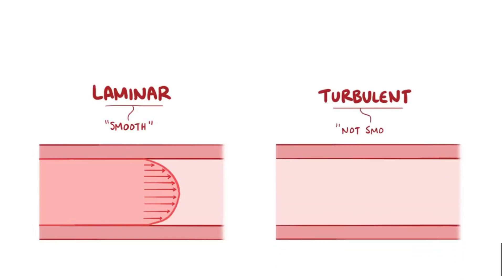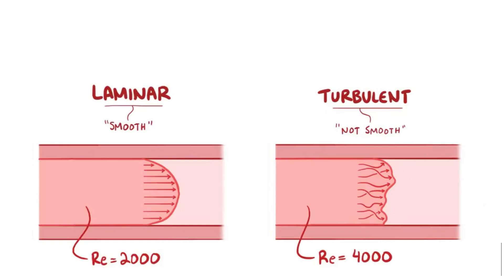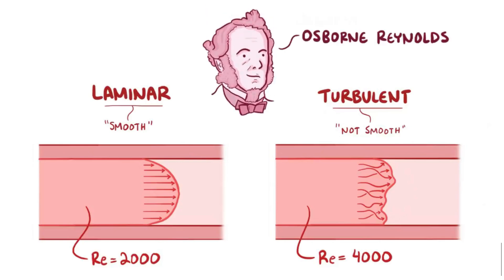Turbulent flow, on the other hand, is when the blood's not flowing smoothly, and we can figure out if blood's likely to be laminar or turbulent by finding its Reynolds number, or Re, which is named after Osborne Reynolds, a Victorian scientist who not only studied fluid dynamics, but is a man who knows how to rock a beard and bow tie.